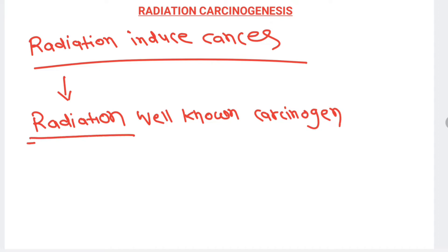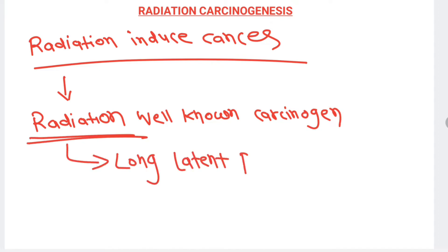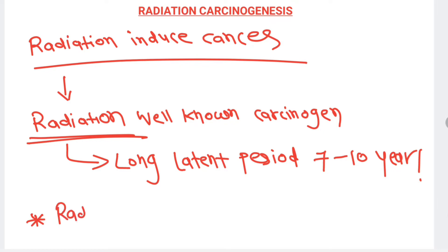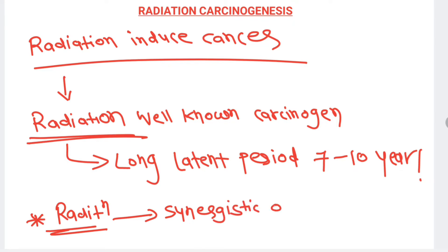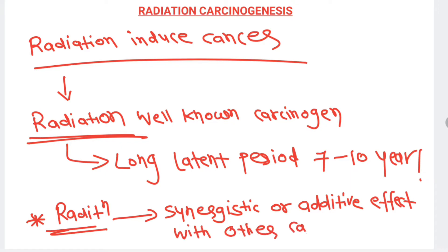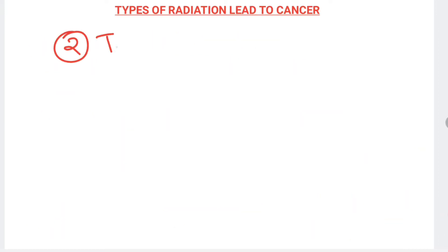After radiation exposure, cancer will develop after a long latent period. The latent period could be up to seven to ten years. Meanwhile, radiation has a synergistic or additive effect with other carcinogens, so combined with other carcinogens, radiation could act as a potent carcinogenic agent.